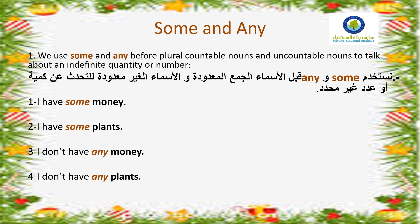You will see that here we can only use some, not any, and I will tell you why. Number two: I have some plants. Here, plants is a plural countable noun, so we can use some. Number three: I don't have any money. You can see the difference — sentence one is affirmative, but sentence three is negative, so we use any. Number four: I don't have any plants. Again, plants is a plural countable noun, and with a negative sentence we use any.